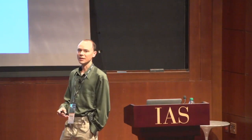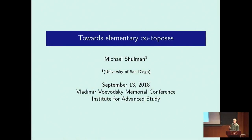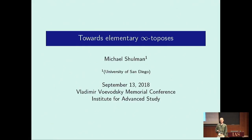I'm going to talk about the subject of elementary infinity toposes, which is a fairly new thing that we've just really started looking at — this definition and what we can do with it. I want to use this opportunity also to bring out and emphasize a particular contribution of Voevodsky's, which I think is often not emphasized as much as it should be, especially in comparison to other things like univalence.